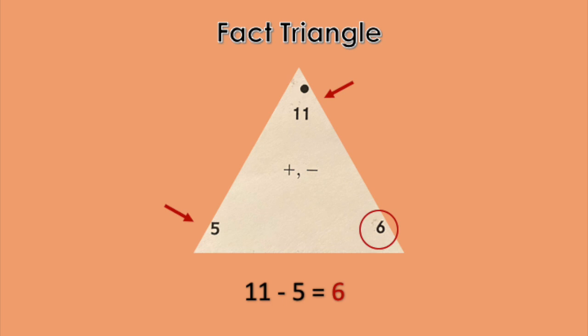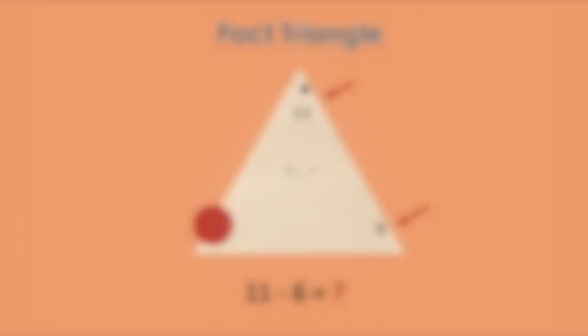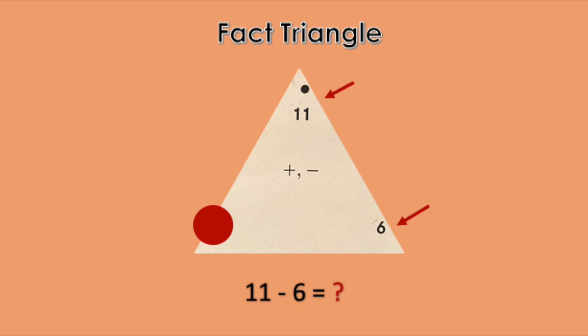Let's try covering the other corner. Now, we'll still start with 11, but we'll subtract 6. I bet you'll know the answer pretty quickly this time. Nice job! 11 minus 6 equals 5.